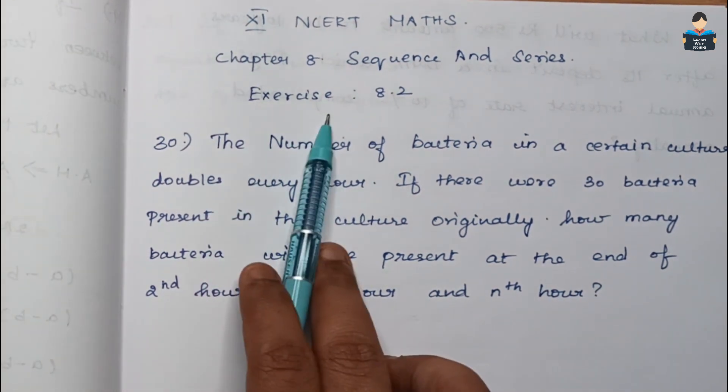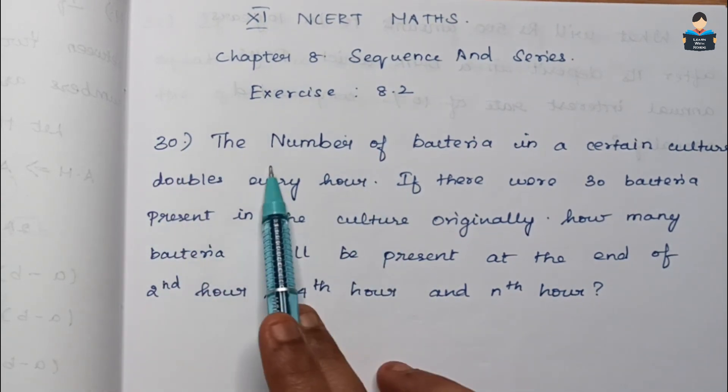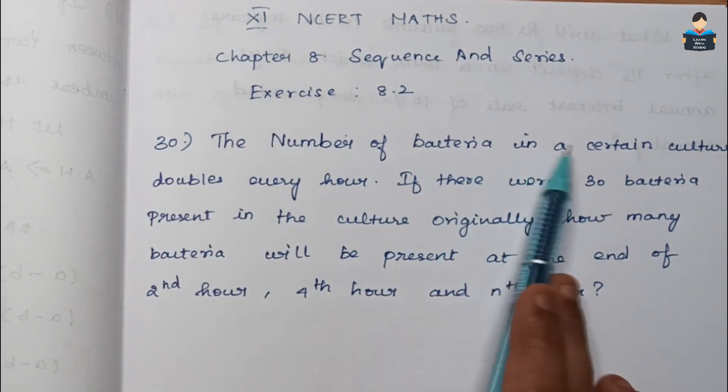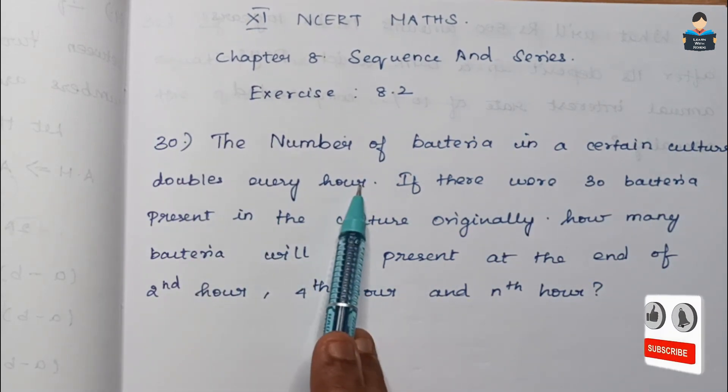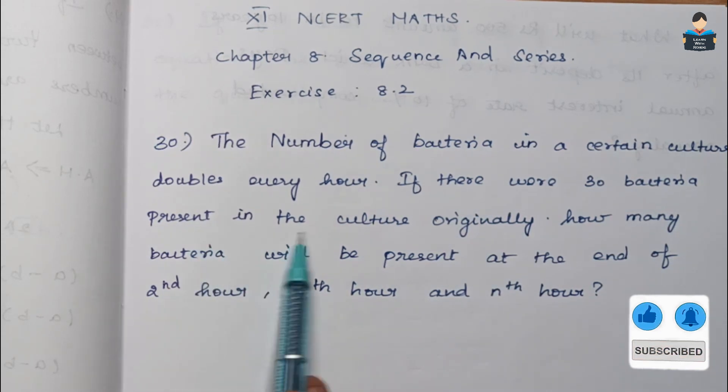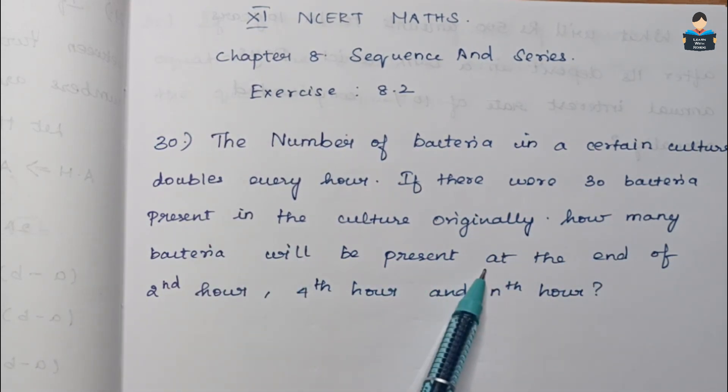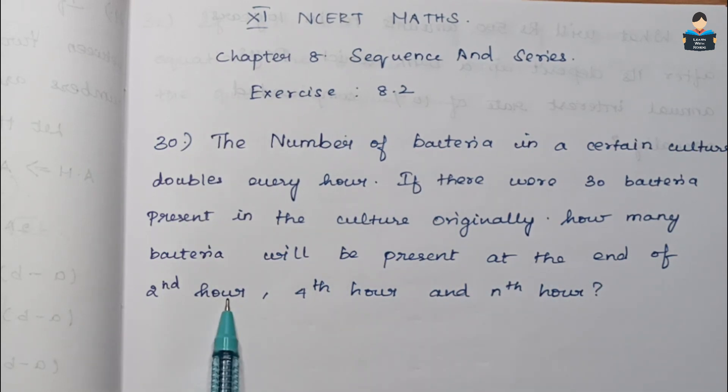In the new NCERT book, Exercise 8.2, Question Number 30: The number of bacteria in a certain culture doubles every hour. If there were 30 bacteria present in the culture originally, how many bacteria will be present at the end of second hour, fourth hour, and nth hour?